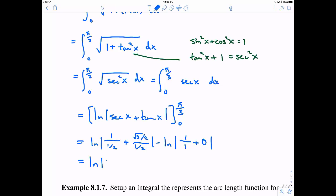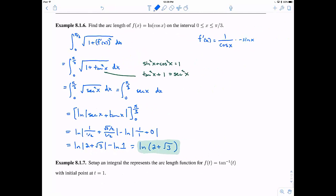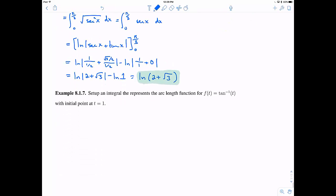A little bit of simplification here. Instead of dividing by a fraction, I can multiply by its reciprocal. Apply that a couple times. And then minus the natural log of 1. Well, the natural log of 1 is just 0. So this is going to be the natural log of 2 plus root 3. Notice I don't need the absolute values anymore because 2 plus root 3 is already positive. There is my final answer. That is the length of this curve from 0 to pi over 3.